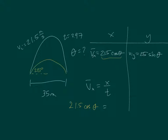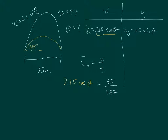So 21.5 cos theta goes right in place of v-bar-x. For x and t, you have those values: 35 for x and 3.97 for t. Then solve for theta. To get rid of the 21.5 next to cosine theta, divide by 21.5 — that gets cosine theta by itself. You can write it with 21.5 in the denominator on the other side, giving you your expression for cosine theta. You'll get a decimal, and it must be a decimal less than 1.